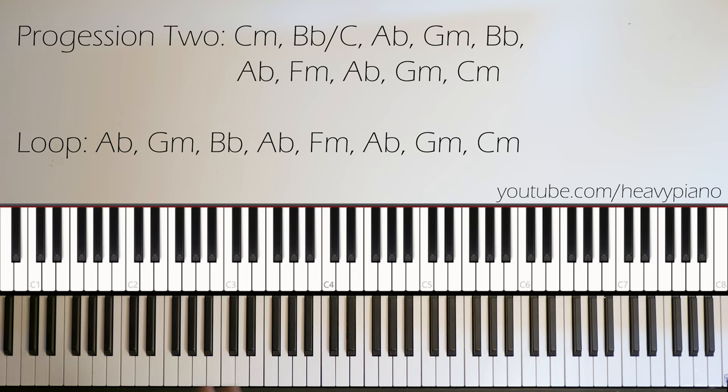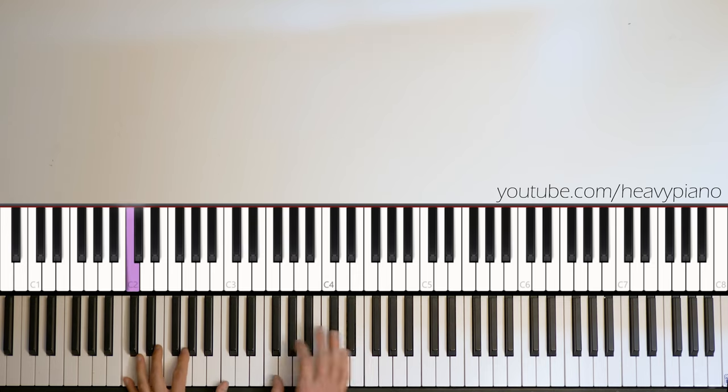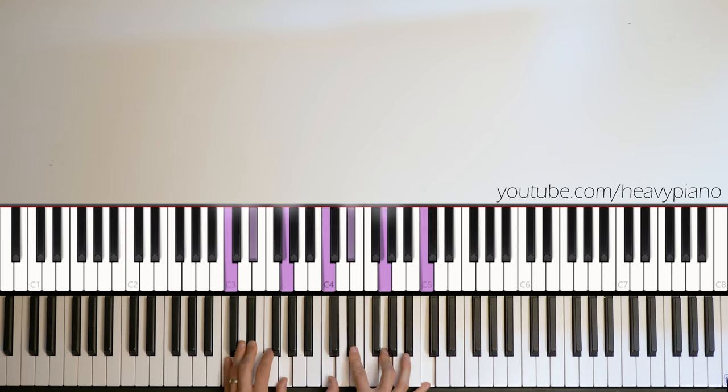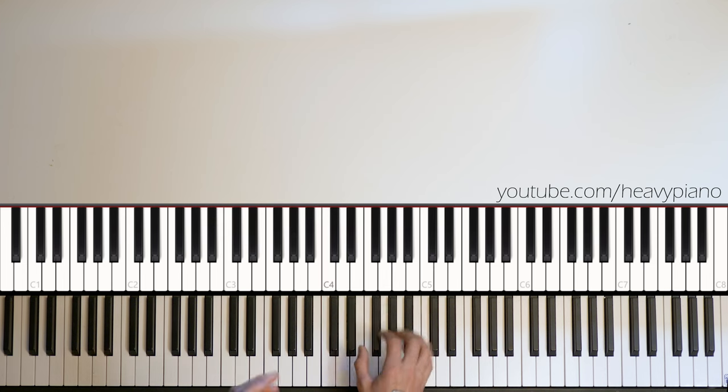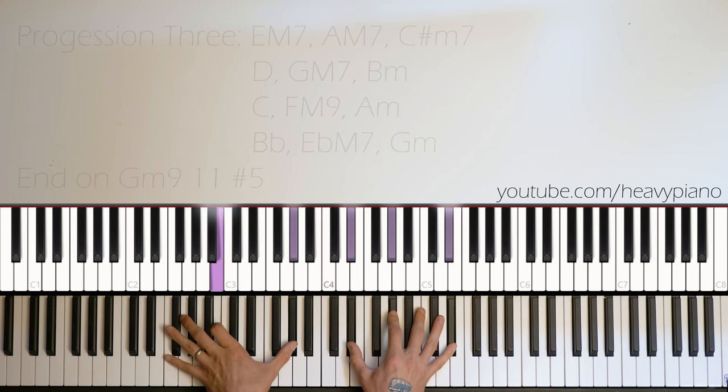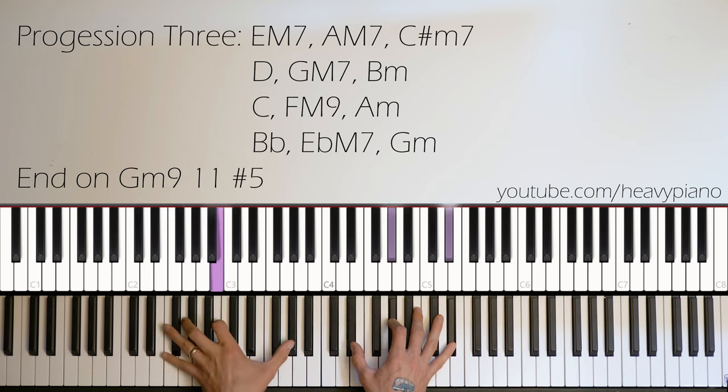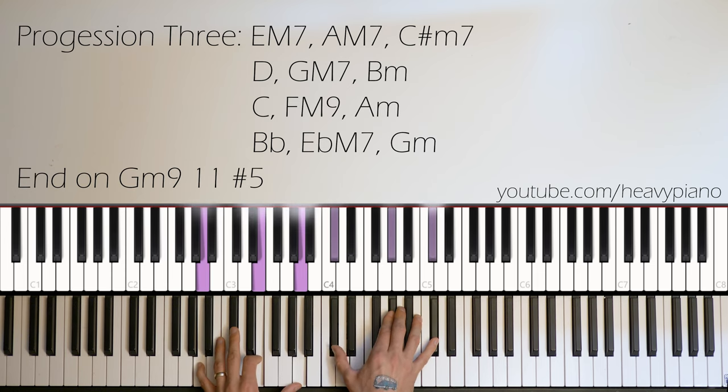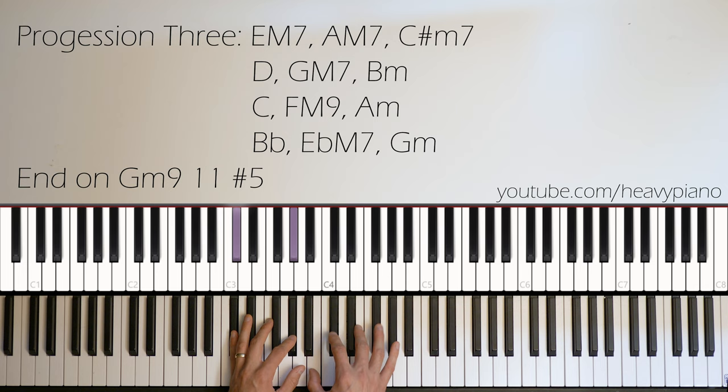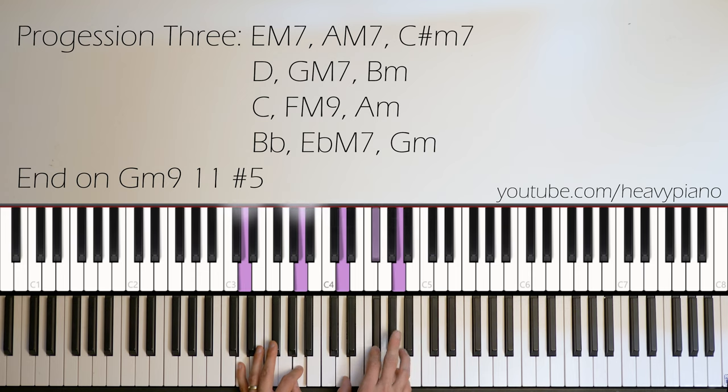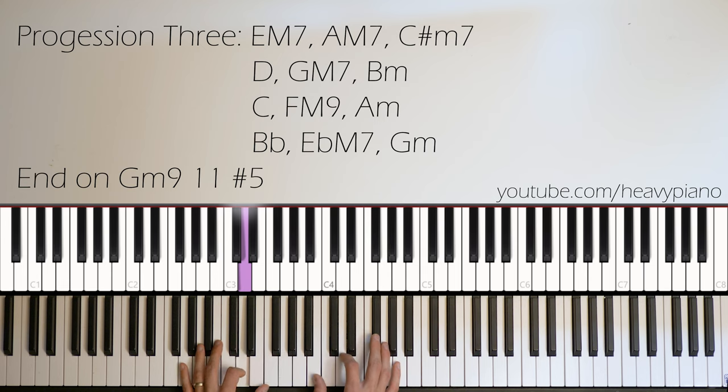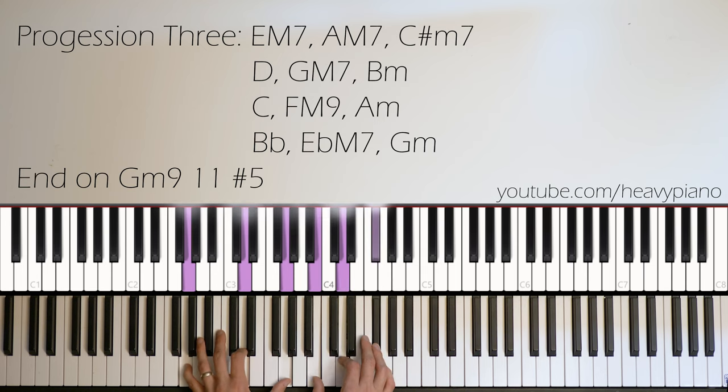Then our last little bit here is absolutely beautiful because we're coming out of C minor into, I love this, love this, love this. E major 7. A major 7. C sharp minor 7. C sharp minor 7. Like a D6 with a sharp 4 in there. G major 7. B minors.